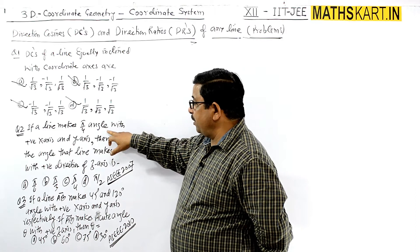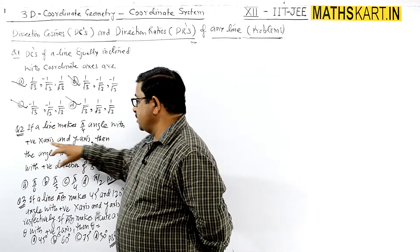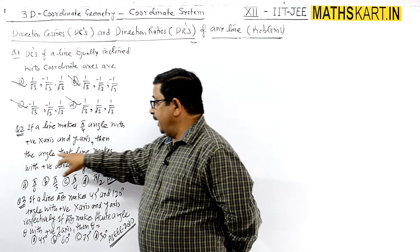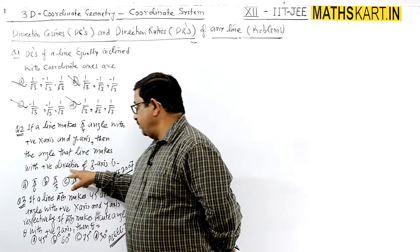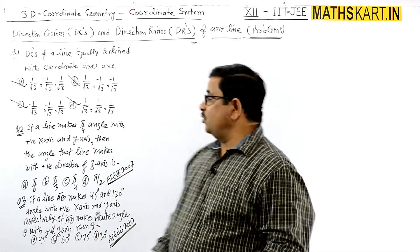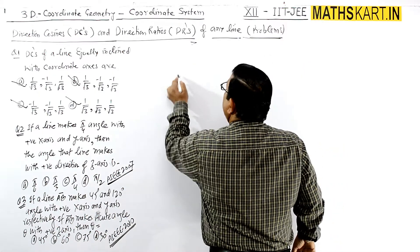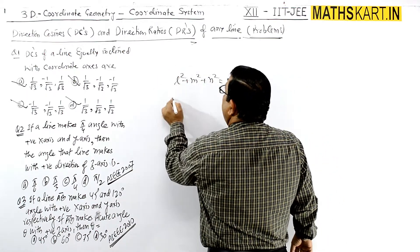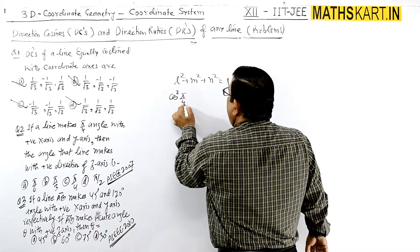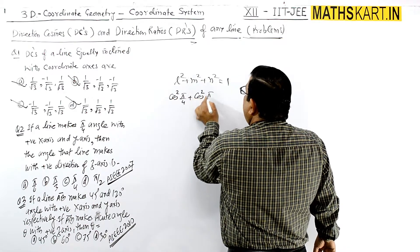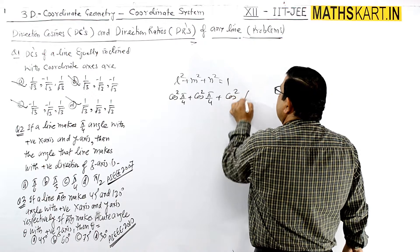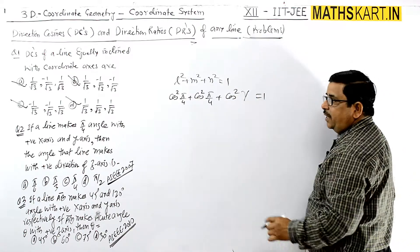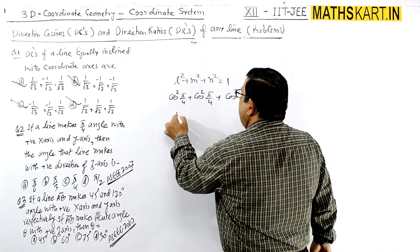If a line makes π/4 angle with the positive x-axis and the y-axis, then the angle that line makes with the positive direction of the z-axis is: We use L² + M² + N² = 1. We write cos²(π/4) + cos²(π/4) + cos²γ = 1.